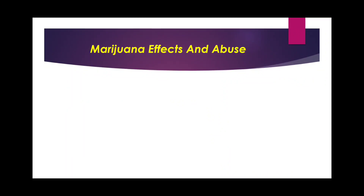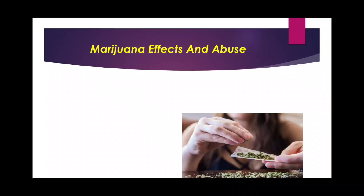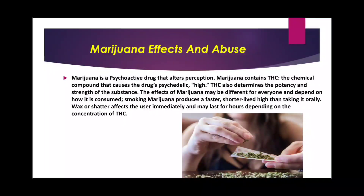Marijuana is a psychoactive drug that alters perception. It contains THC — tetrahydrocannabinol — the chemical compound that causes the psychedelic high. THC also determines the potency and strength of the substance. The more the concentration of THC in the marijuana, the stronger the effect. The effect of marijuana may be different for everyone and depends on how it is consumed.